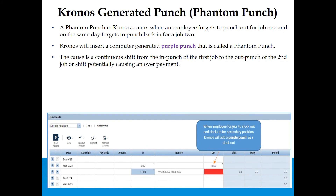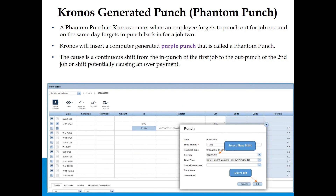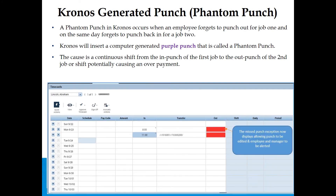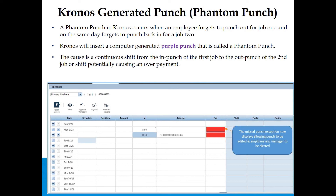Kronos-Generated Punch — Phantom Punch: A phantom punch in Kronos occurs when an employee forgets to punch out for Job 1 and on the same day forgets to punch back in for Job 2. Kronos inserts a computer-generated purple punch called a phantom punch. This creates a continuous shift from the in punch of the first job to the out punch of the second job, potentially causing an overpayment. To resolve: right-click on the cell to activate the punch actions box, select Edit, select New Shift, and select OK. By selecting New Shift, the punch moves down, creating the missed punch that should have been there, allowing the punch to be edited and the employee and manager to be alerted.